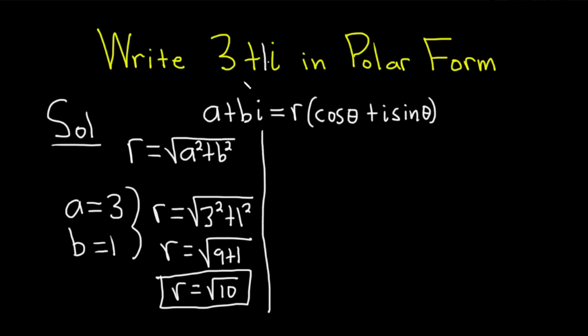So to find theta, I like to just basically take our complex number and then just force it to be equal to the polar form. Let's do that. So in other words, we have 3 plus i